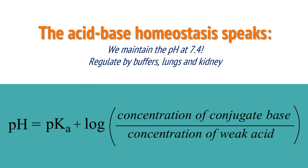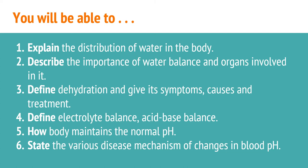These water, electrolyte and acid-bases are interrelated and hence they are considered together in this discussion. Before going toward the discussion, let's see what are the learning outcomes of this video lecture. After going through this video lecture, you will be able to: (1) explain the distribution of water in the body; (2) describe the importance of water balance and organs involved in maintaining the water balance; (3) define dehydration and give its symptoms, causes and treatment; (4) define electrolyte balance and acid-base balance, and how the body maintains the normal pH — which is very much essential to carry out various metabolic processes; and lastly, state the various disease mechanisms of changes in blood pH.